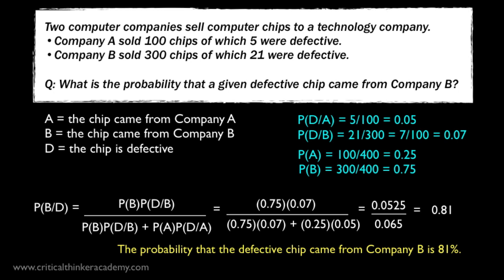81%. The prior probability of any given chip coming from Company B was 75%. But once we learned that the chip was defective, and we knew the ratio of defective chips that came from Company B, this information raised the probability that the defective chip came from Company B to 81%.